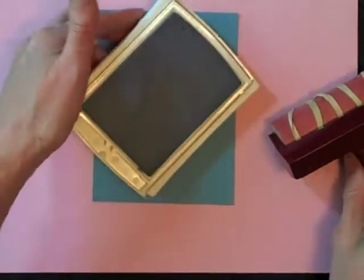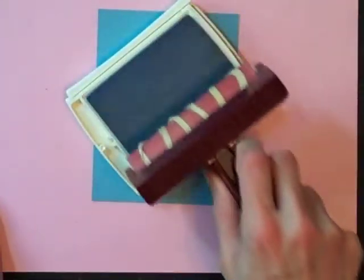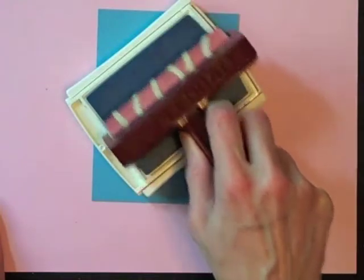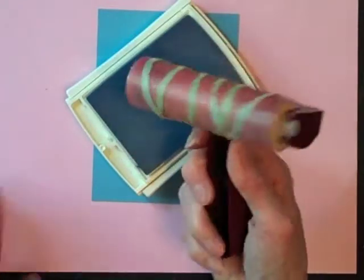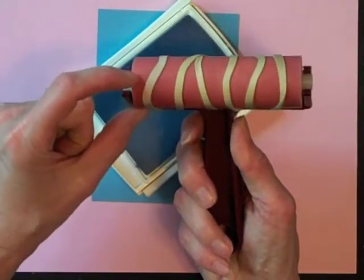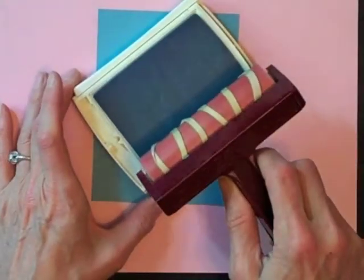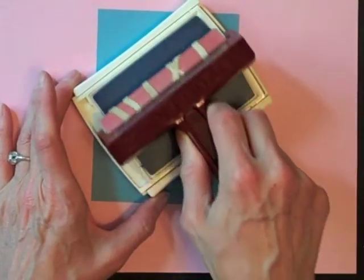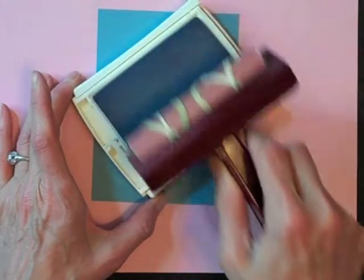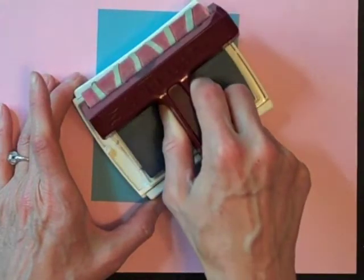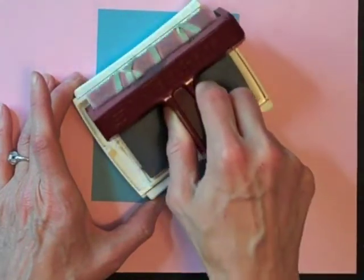And as you may already know when you ink up a brayer you don't want to just go back and forth in one area because if you do that all you're doing is inking this one portion of your brayer and nothing else. So to ink things up you want to lightly press and push and then lift up and then press and push lift up press and push lift up.